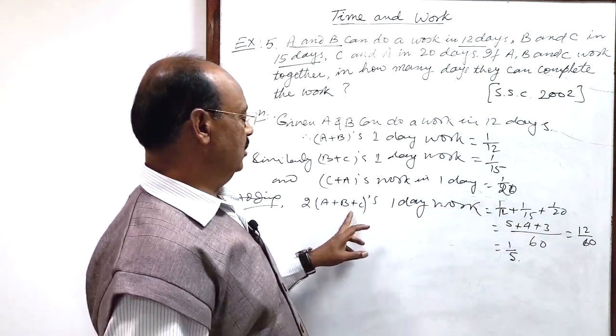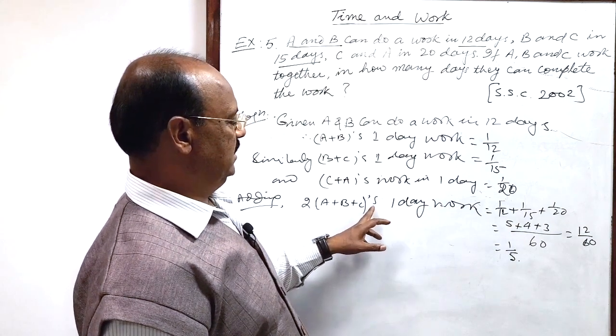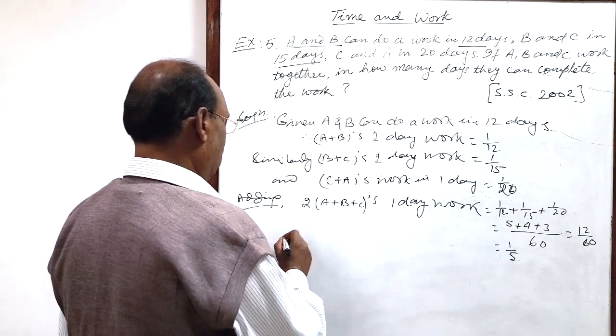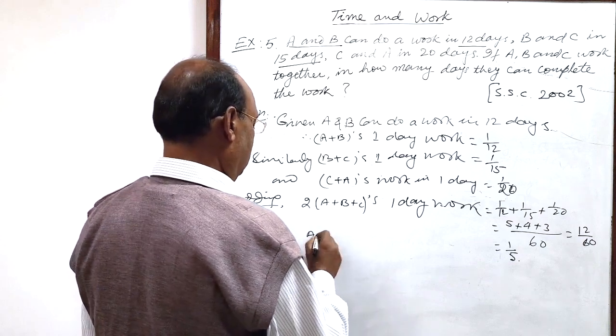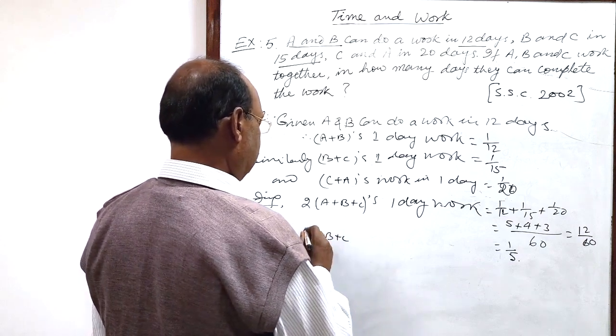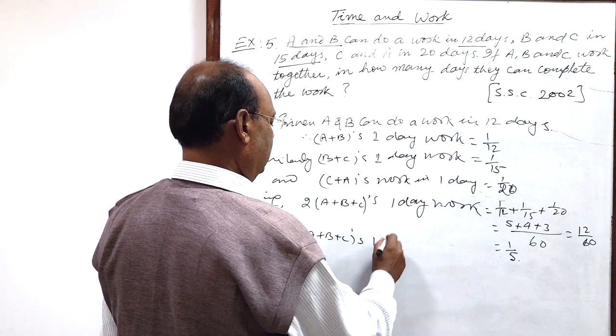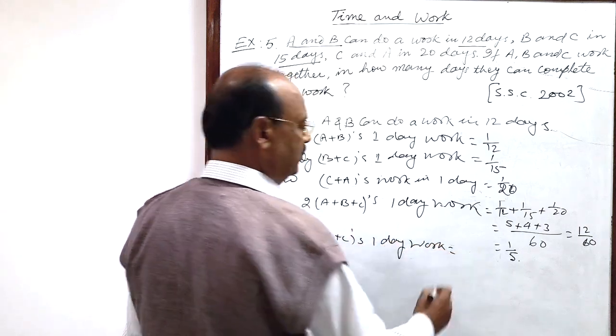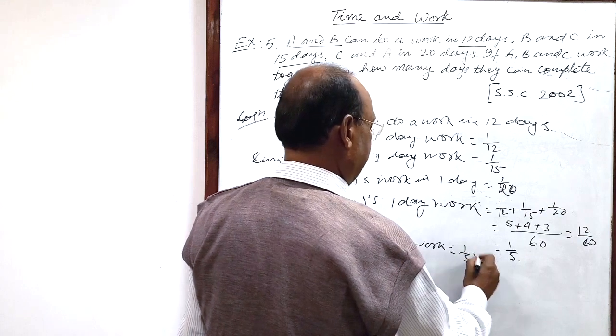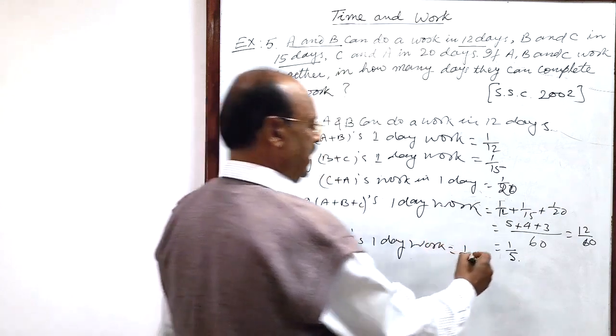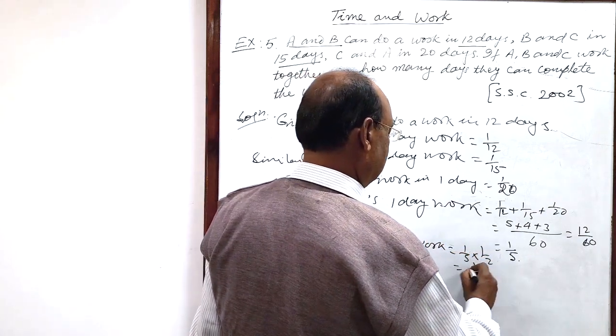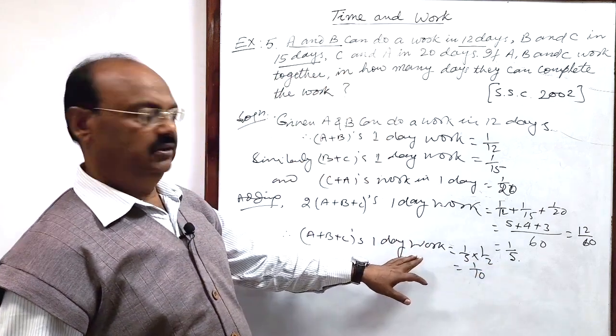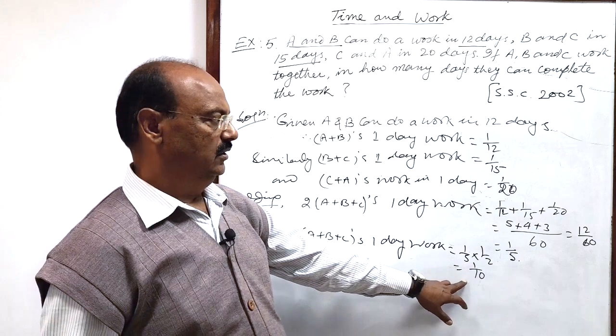So two times of A plus B plus C's one day work is equal to 1 by 5. This two will be transposed to right hand side, 1 by 2. So this is equal to 1 by 10. This is one day's work, 1 by 10.